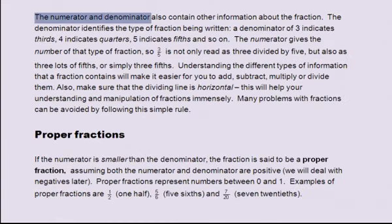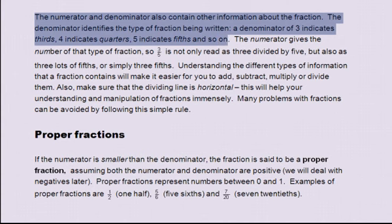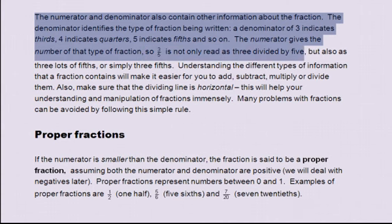The numerator and denominator also contain other information about the fraction. The denominator identifies the type of fraction being written: a denominator of three indicates thirds, four indicates quarters, five indicates fifths, and so on. The numerator gives the number of that type of fraction. So three-fifths is not only read as three divided by five, but also as three lots of fifths, or simply three-fifths.